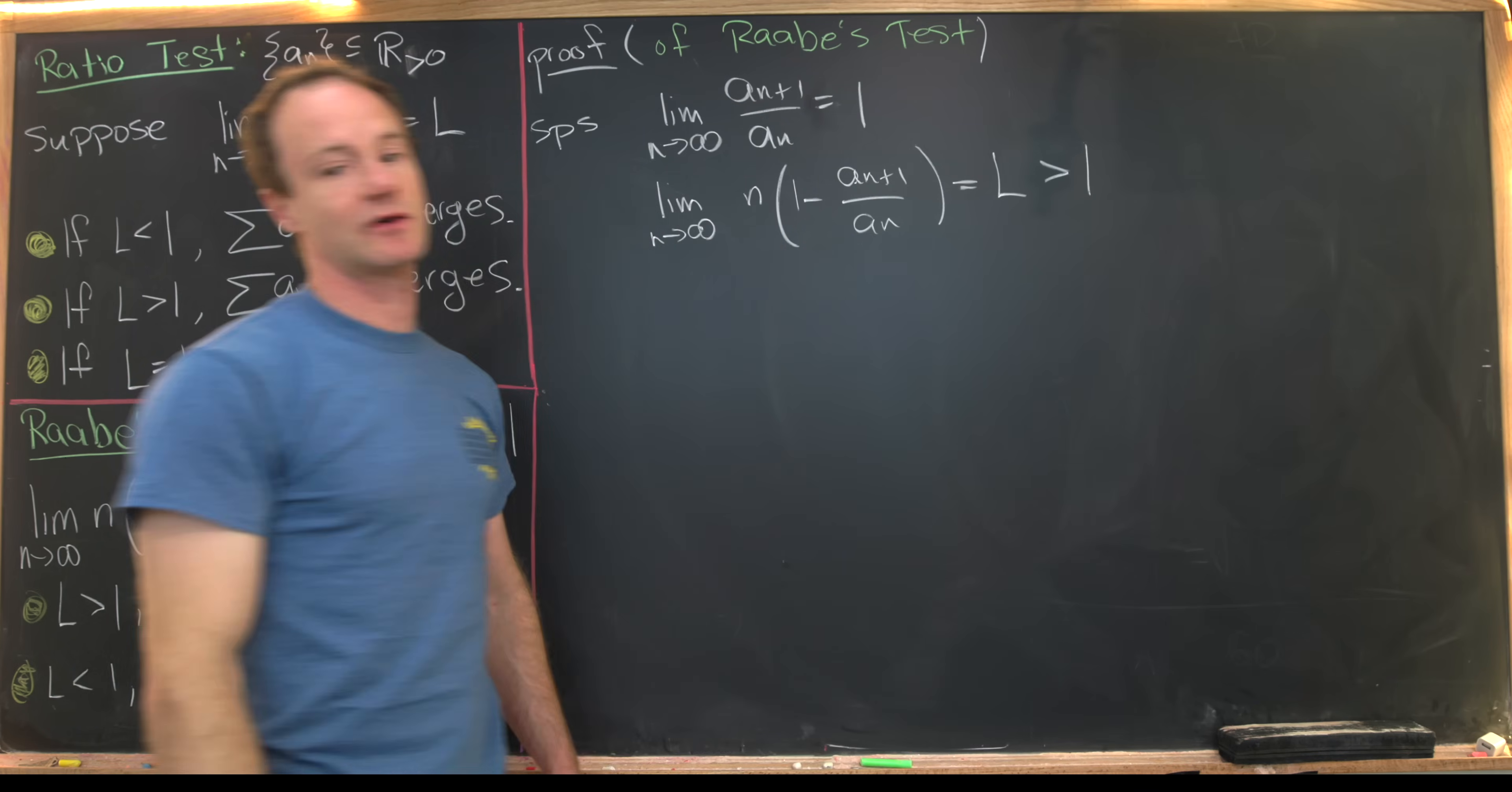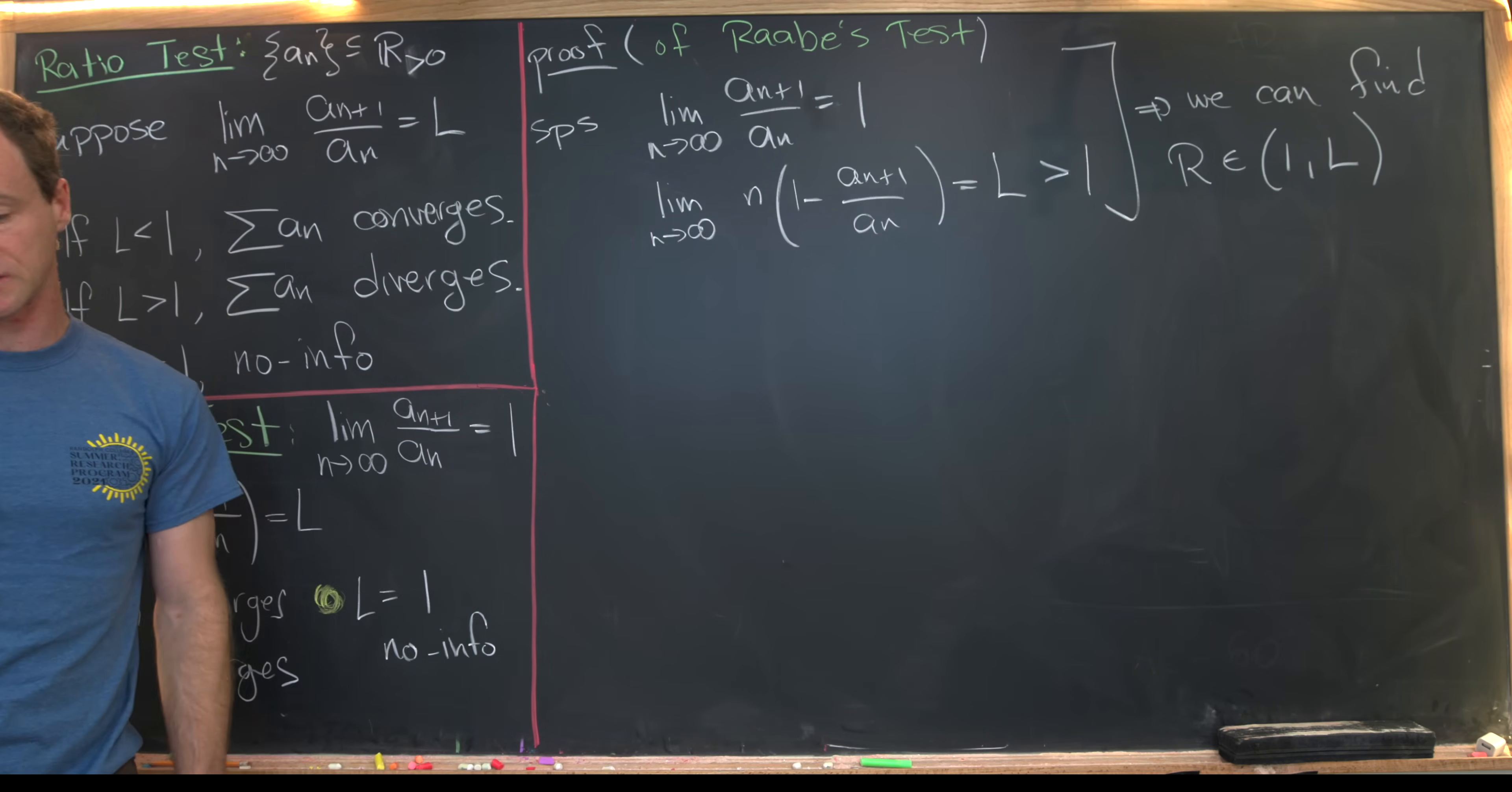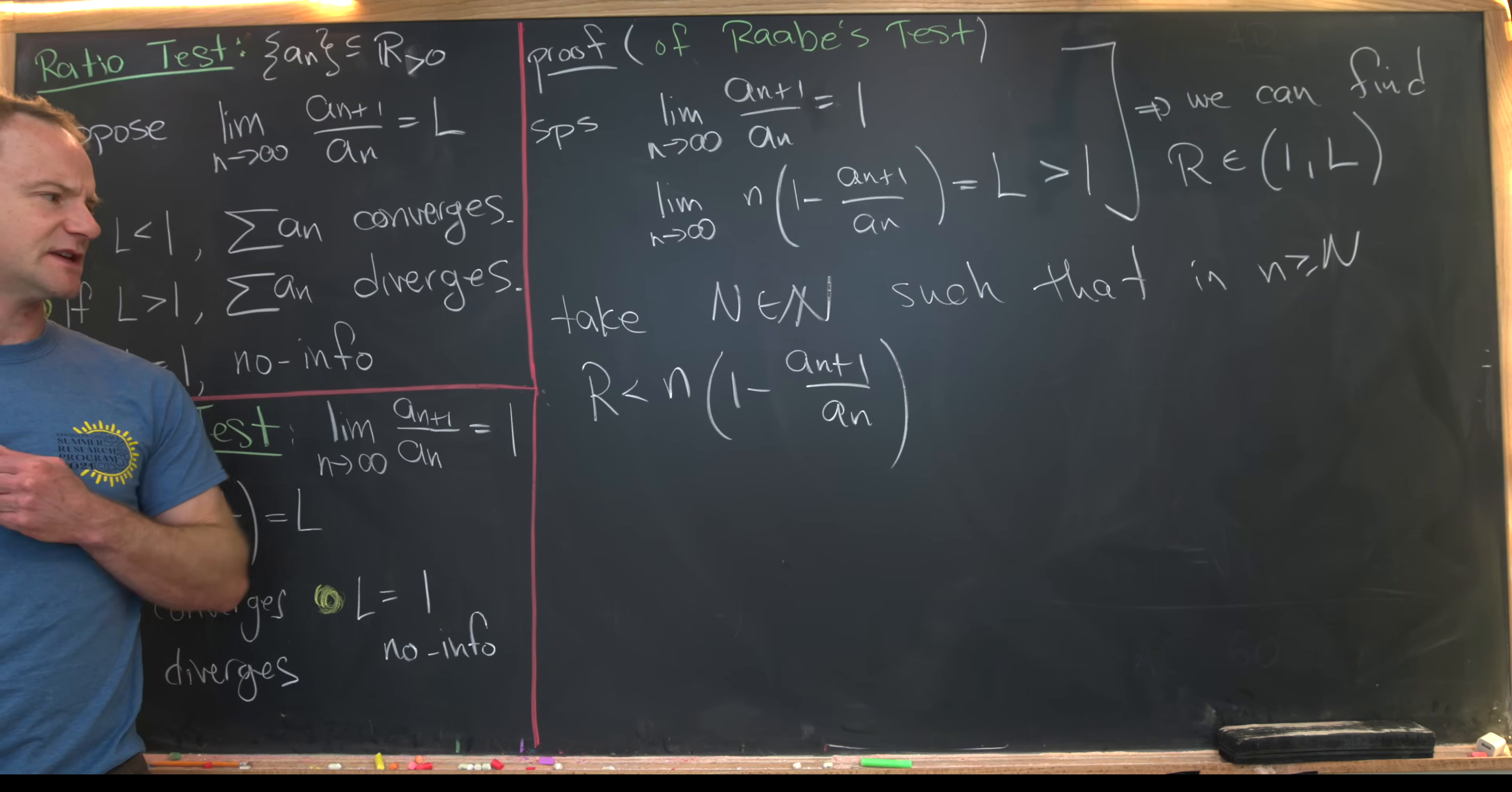So that puts us in this condition down here. And then next I want to notice the fact that L is bigger than 1. That means we can find some value r which is from the open interval (1, L). So if L is bigger than 1, then there's going to be some number between L and r. And then also using the convergence properties of series, what we'll do is take N in the natural numbers such that if little n is bigger than or equal to capital N, we have r is less than n(1 - a_{n+1}/a_n). So let's see why that's possible.